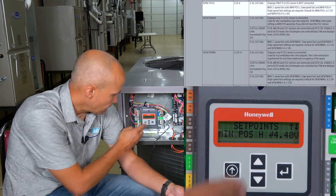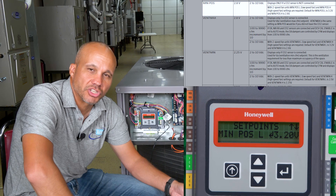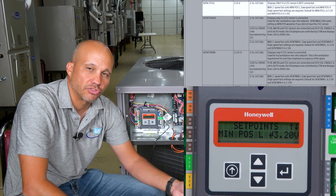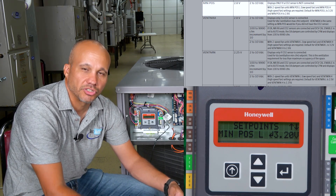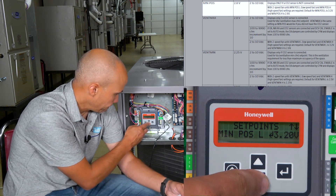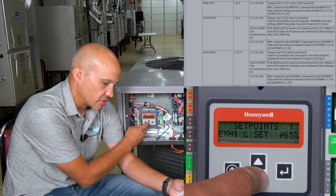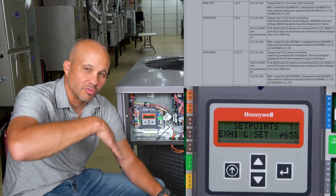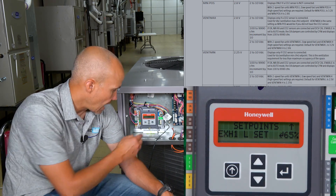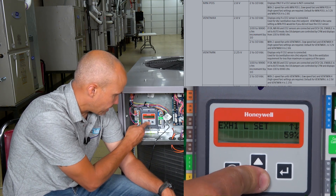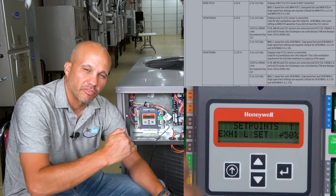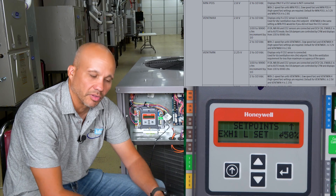Scrolling down, I have Minimum Position H and Minimum Position L — two minimum positions because I told it I have a two-speed fan. If I only had a one-speed fan, there'd be only one. So what damper position do you want for minimum code-required ventilation when the fan is on low, and what do you want when it's on high? I also have an exhaust fan set up: when the damper gets to a certain percent open, turn the power exhaust on. I'll change that to 50 — so whenever the damper opens halfway, I'll kick the power exhaust fan on to relieve the building pressure problem.